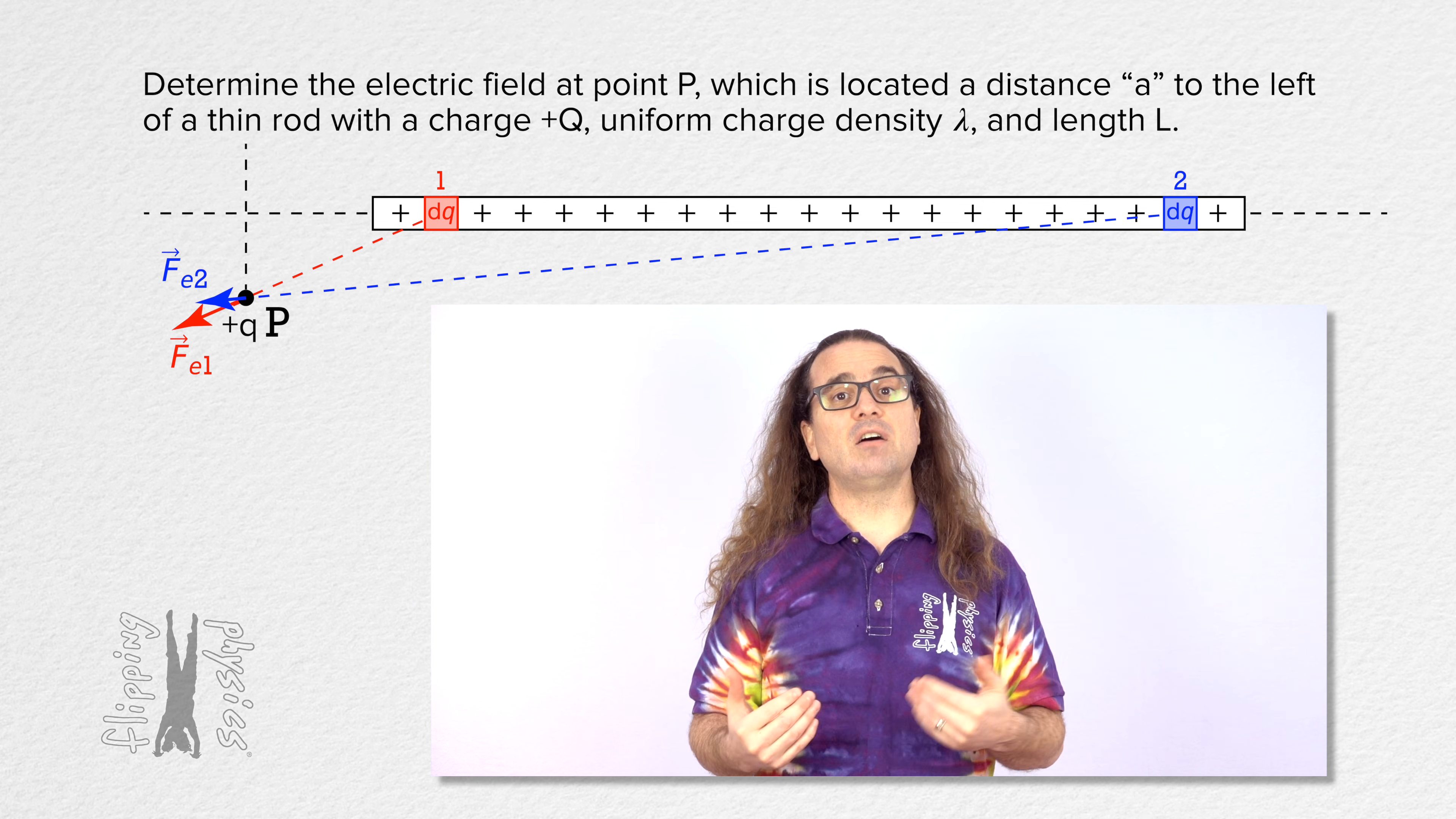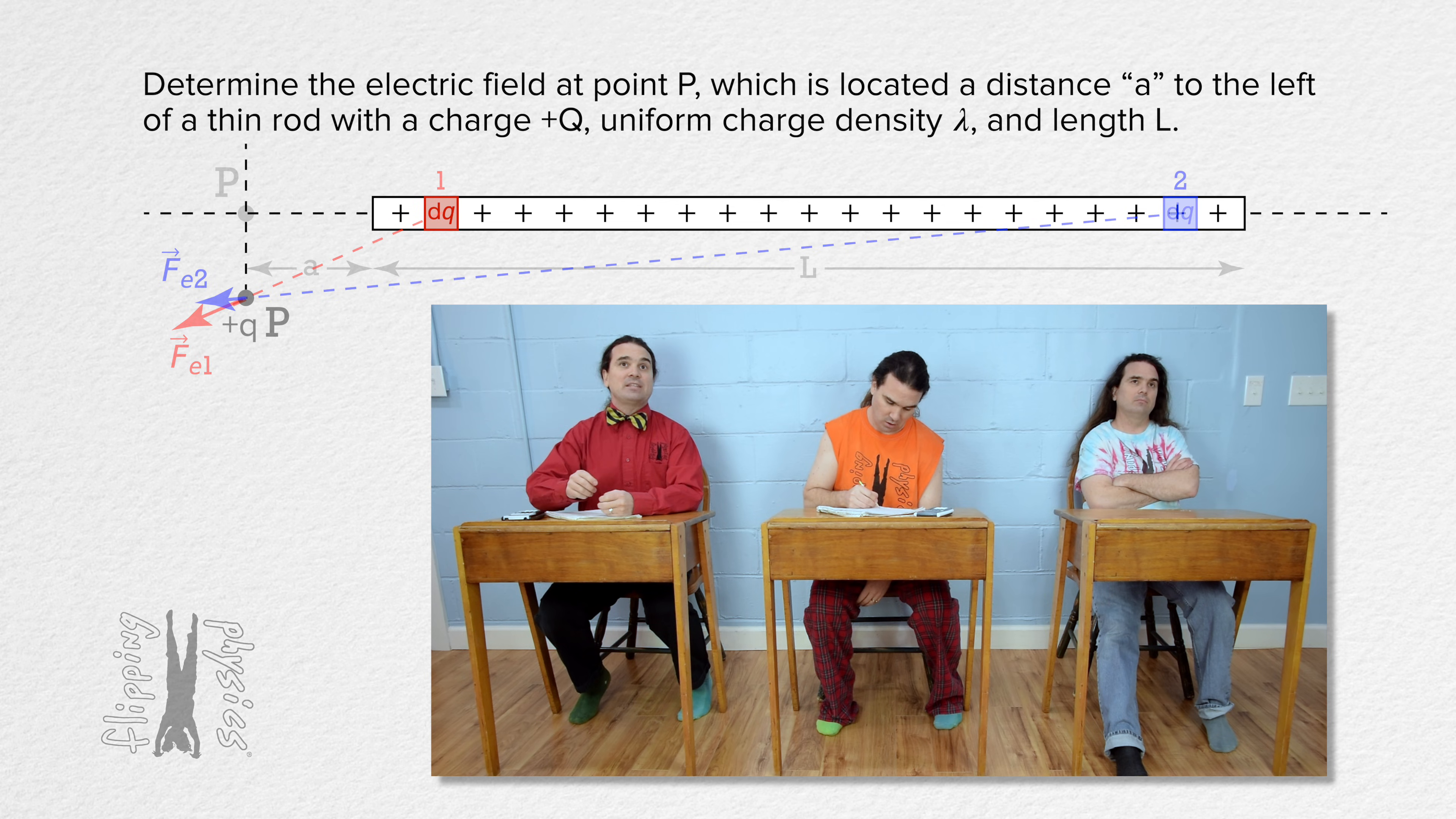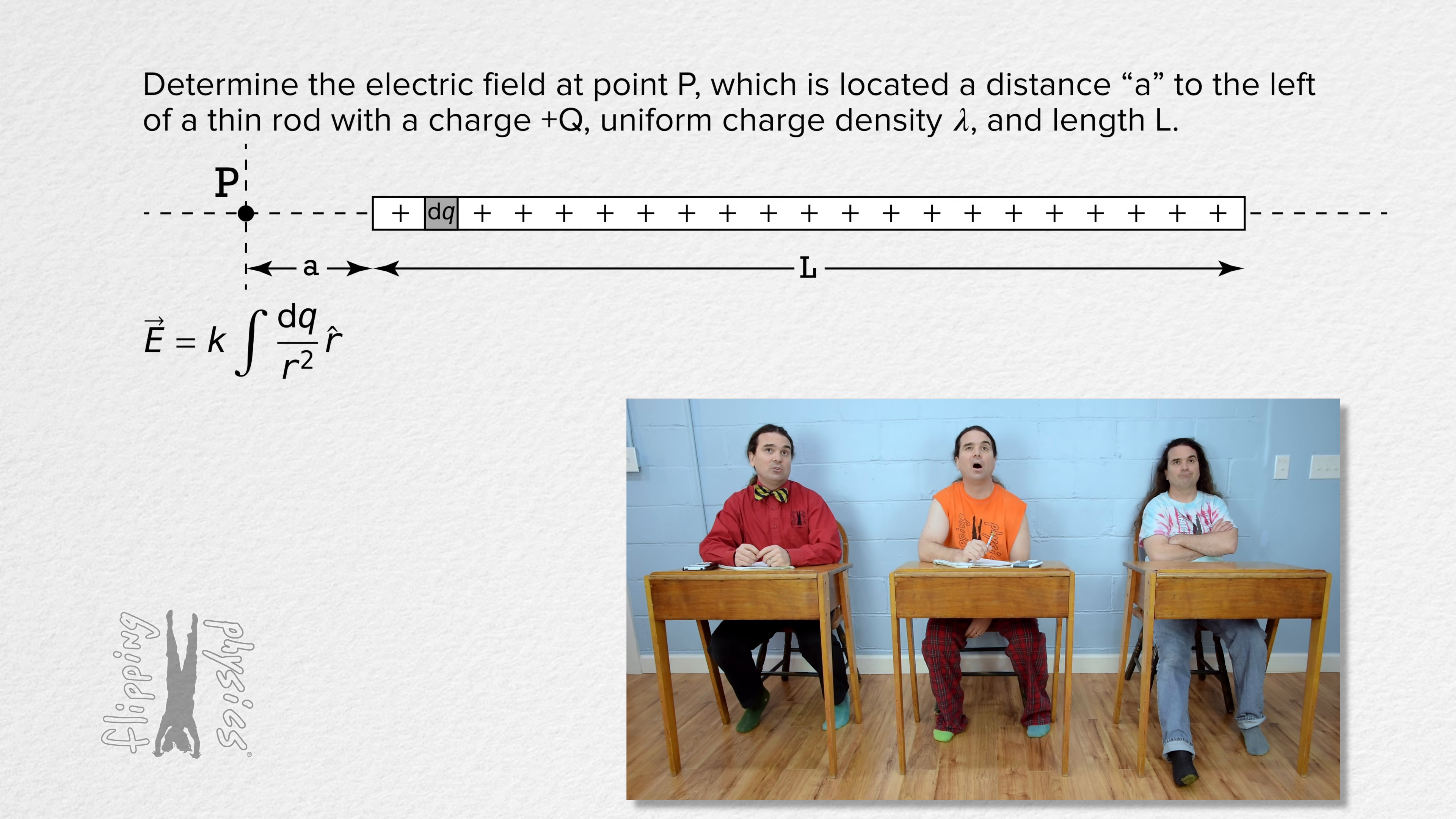Billy, please solve for the electric field. Absolutely. Previously, we determined the electric field from a continuous charge distribution equals the Coulomb constant times the integral of dq over r squared times unit vector r.